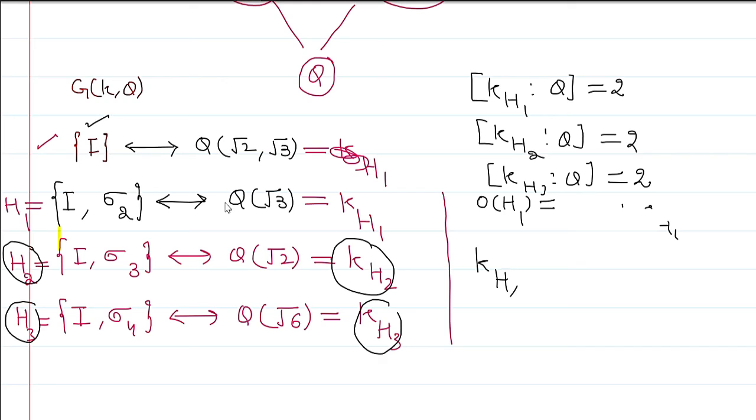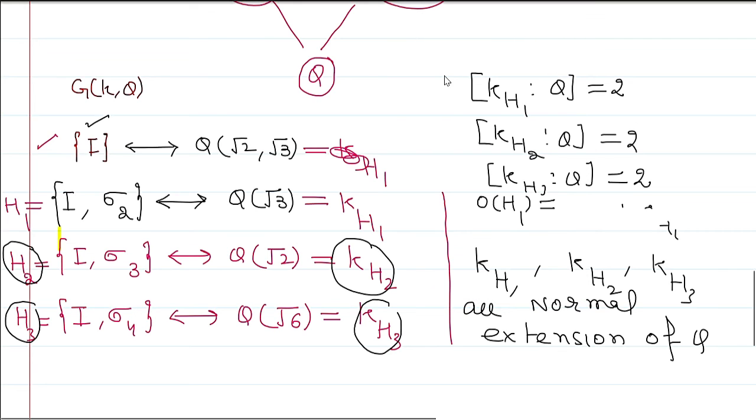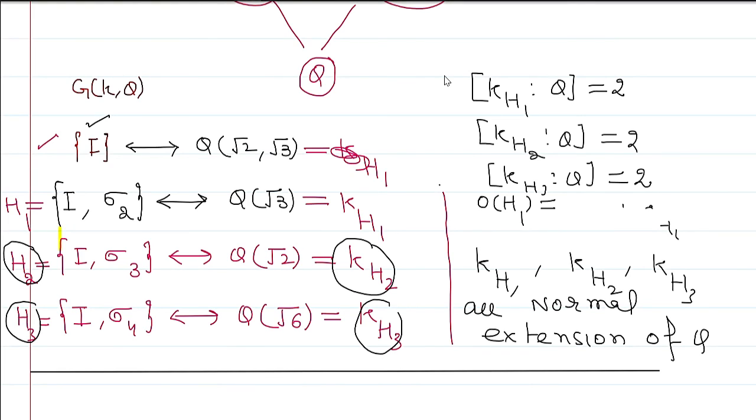And we know that when the degree is 2, it is always a normal extension. So what we get: KH₁, KH₂, KH₃ - these are normal extensions of Q. So that's it. When we have a Galois group, when we have a Galois extension, we can use the fundamental theorem to prove this. So any question where we need to prove the fundamental theorem of Galois theory, we can prove it like this.